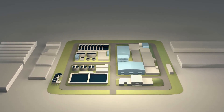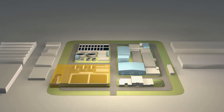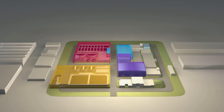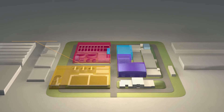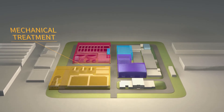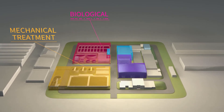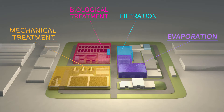The plant is divided into four sections: the mechanical treatment, the biological treatment, the filtration, and the evaporation. The sewage treatment plant in the back is not covered in this film.